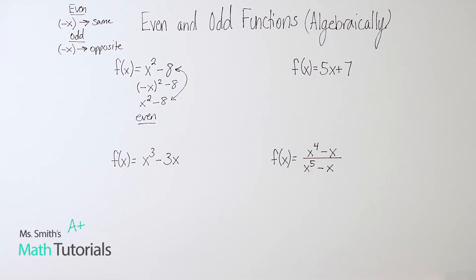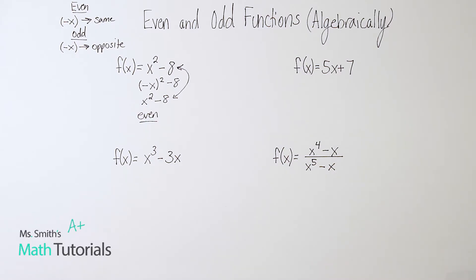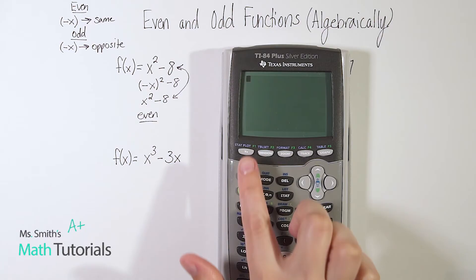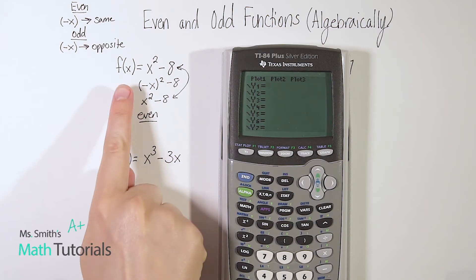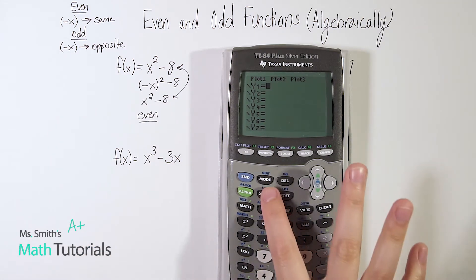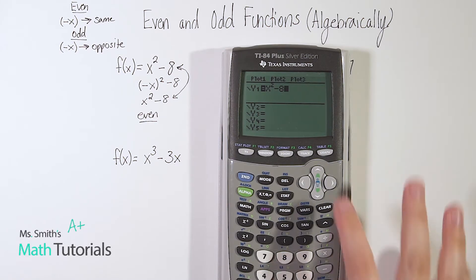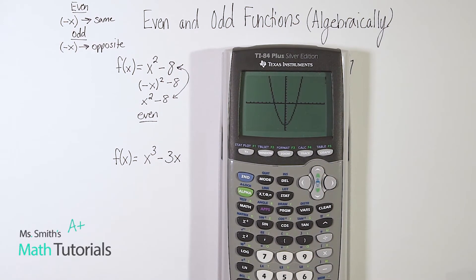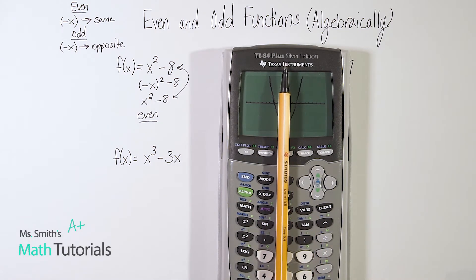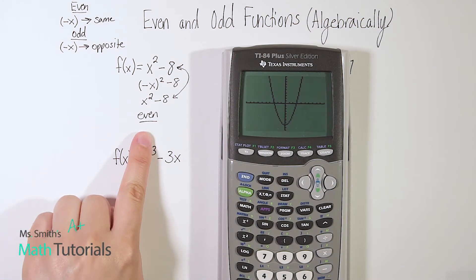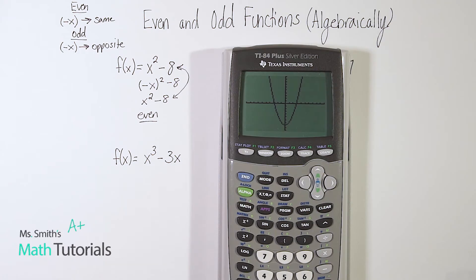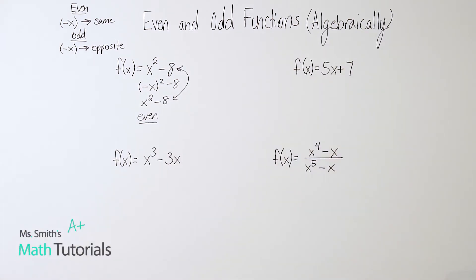Let's check that on the calculator, because we want to be sure. I always find this is a great way to catch any possible mistakes. So I'm going to go to my y equals and type in x squared minus 8, and graph it. If you watched the last video on how to identify even and odd functions graphically, you'll remember that if it is mirrored across the y axis, that means it's even. So that just confirms that I did do this right. We'll use that each time just to double-check our answers.